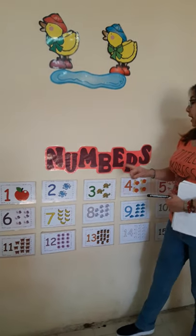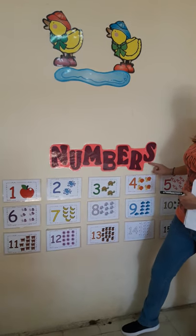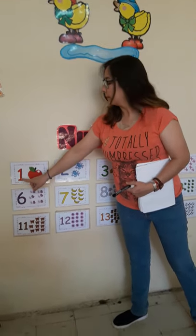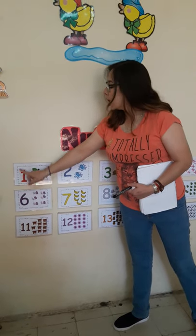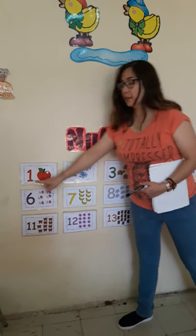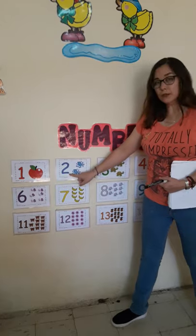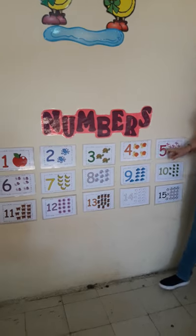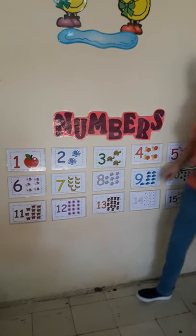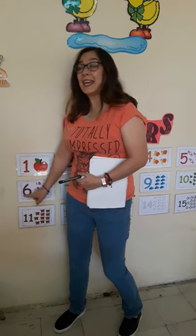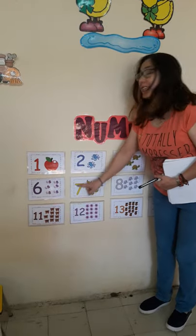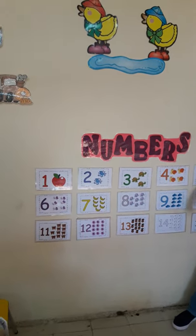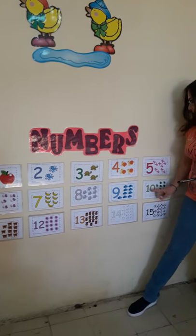Now it's the turn of the numbers. Let's see the numbers and count. One. Two. Three. Four. Five. Six. Seven. Eight. Nine. Ten.